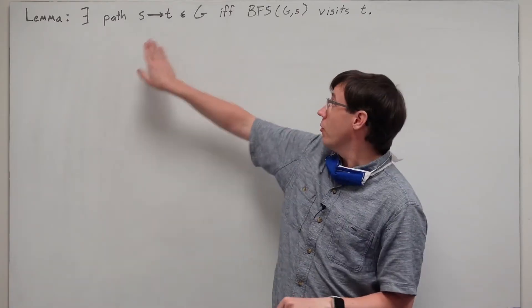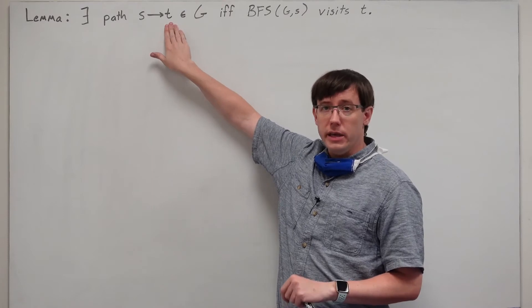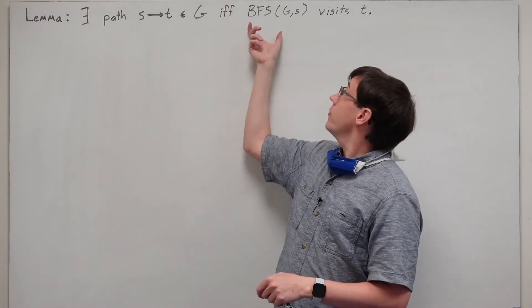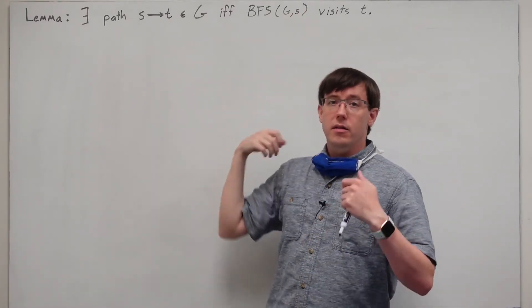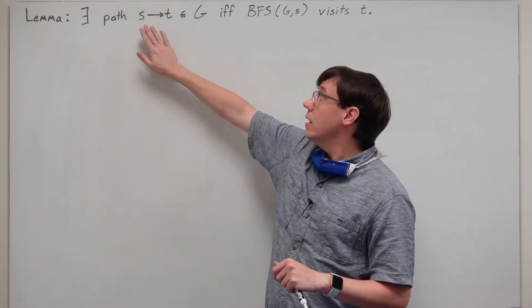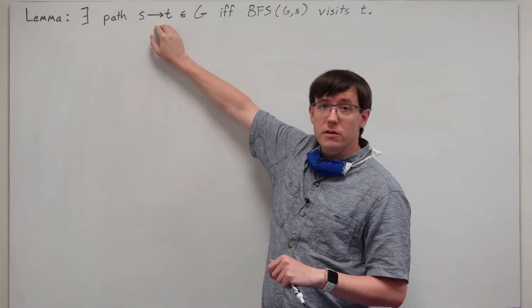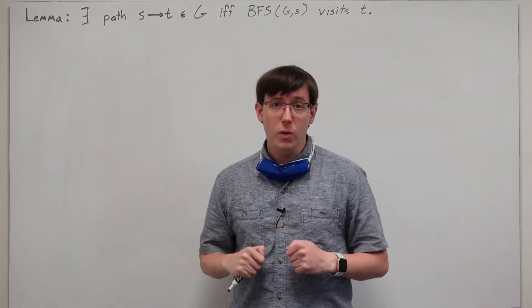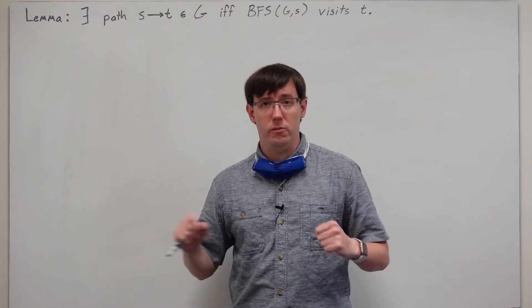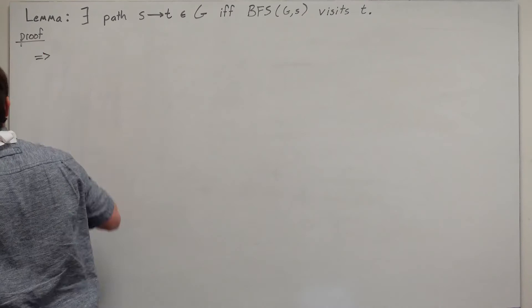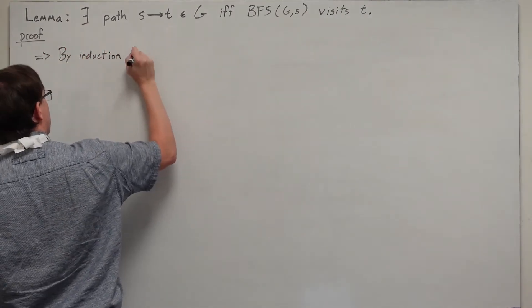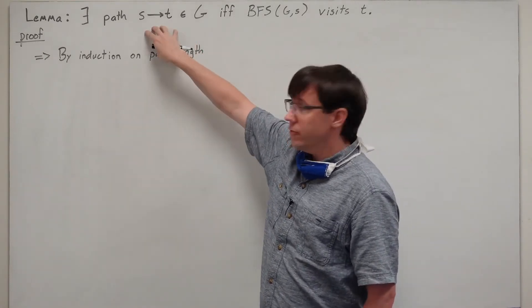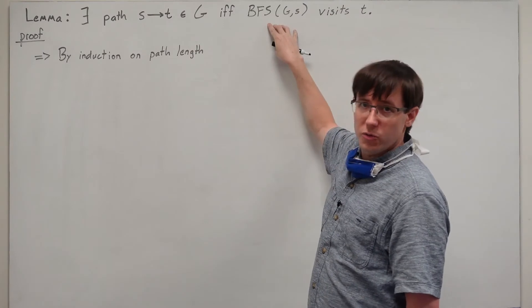If we can show that for any vertex t, there is a path from s to t if and only if the breadth-first search starting from s visits t, then we know that all of the vertices that are reachable will end up in the visited set. This will get us most of the way to proving the correctness of both algorithms. We'll start with the forward implication: if there is a path, then breadth-first search will visit t. We can show this by induction on the length of that path.